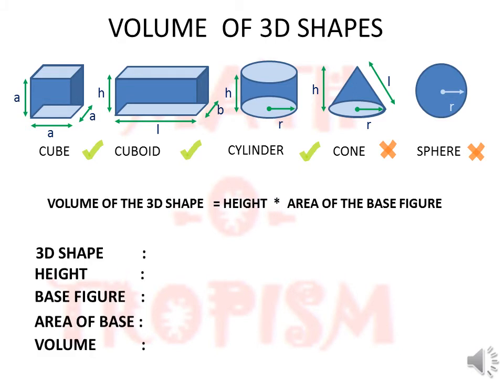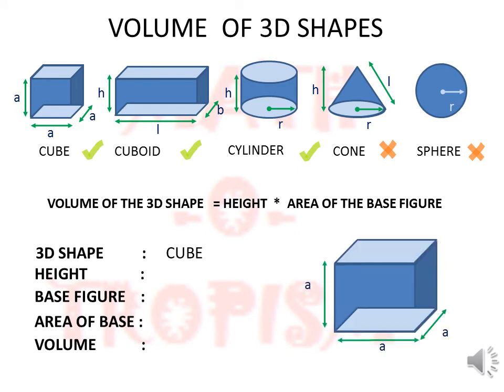Let us take the example of a cube first. The cube has the same side length all over, so the height is also the same. What is the base of a cube? It is a square. So the area is a². Therefore, the volume of the cube is V = a³ cubic units.